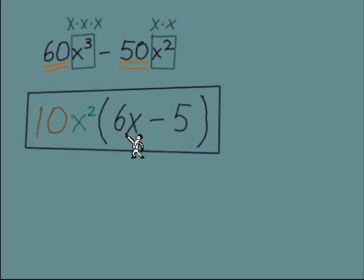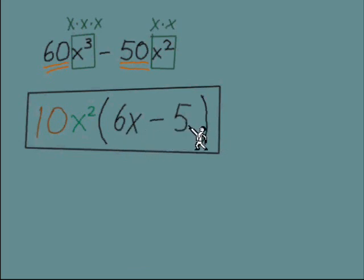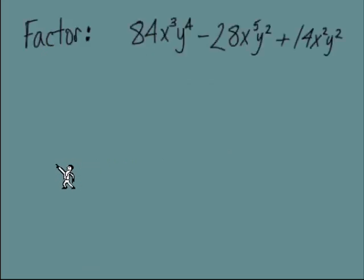One thing we can do is a quick check: did we find the GCF? Look at what we have in parentheses. If the terms inside don't share any more common factors, that's a good sign that we did find the greatest common factor out front.